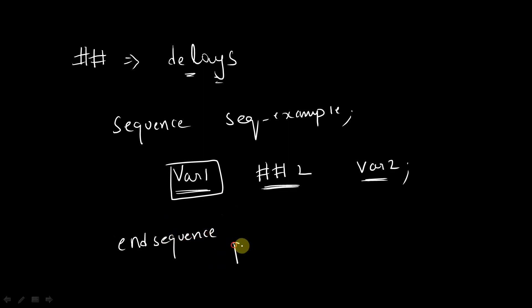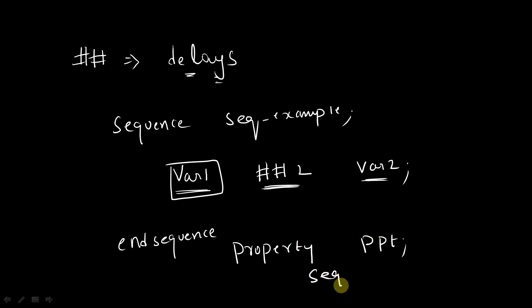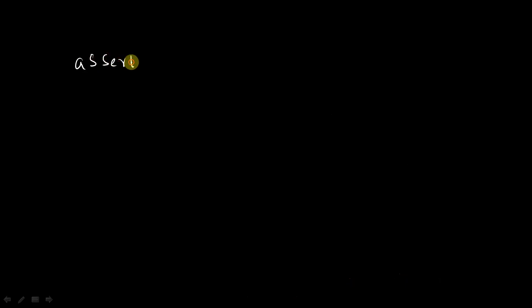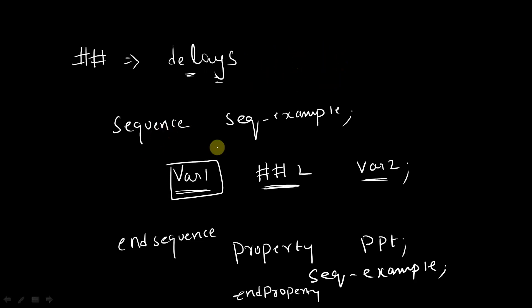And in the property — let's say the property name is ppt — we are going to include this sequence, sequence_example, and end property. Now, we are simply going to write assert property ppt. The sequence timing relationship should be performed at the positive edge of the clock.